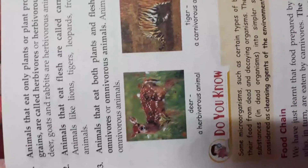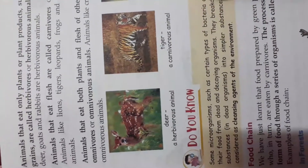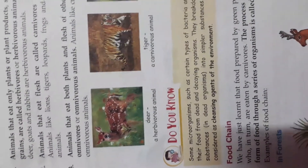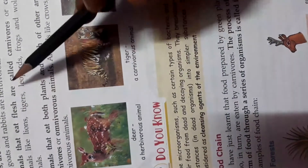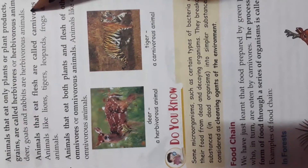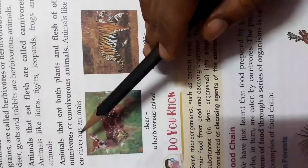Animals are divided into different categories. Animals that eat only plants or plant products such as grass, leaves, and grains are called herbivorous animals. Animals such as cows, deer, goats, and rabbits are herbivorous animals — they eat green grass and leaves.